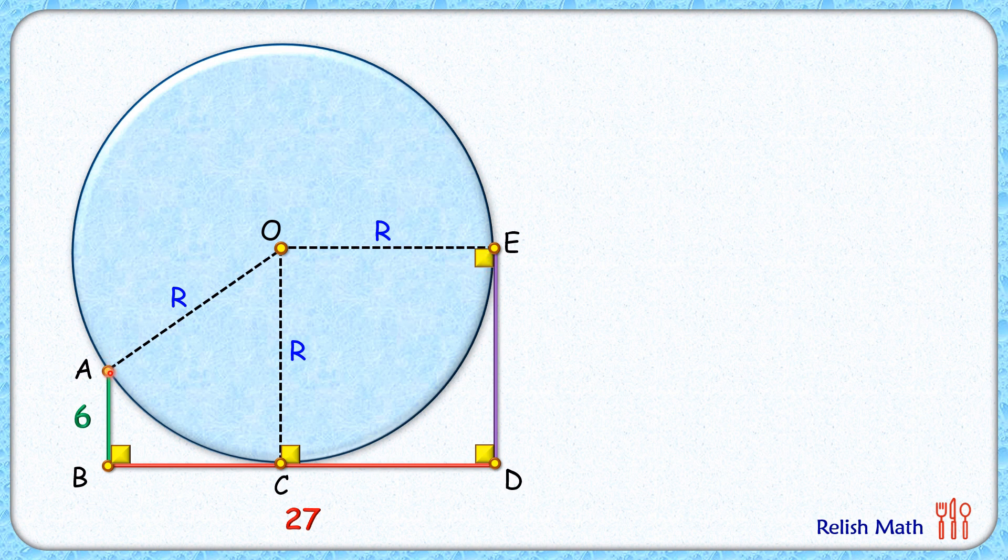From point A, let's drop a perpendicular on OC. Now in this right angle triangle OAF, we have to find the base and the height. For height, we know AB is 6 centimeters, thus FC length will be the same as 6 centimeters, and OF length will be R minus 6.